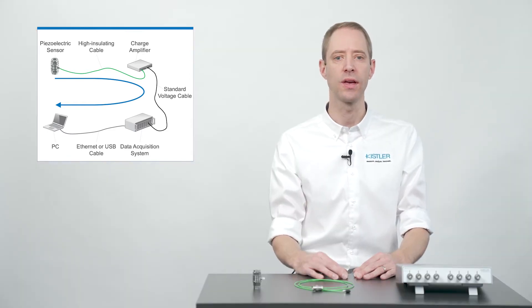Usually, the analog output of the charge amplifier is connected to a data acquisition system through a standard voltage cable to digitize the measurement signal. For further processing and visualization, the acquired measurement signal is transferred to a PC via Ethernet or USB connection.